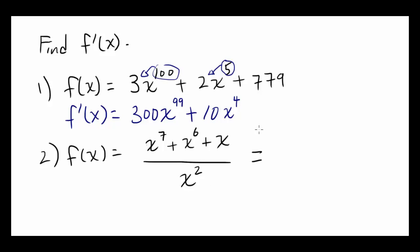x to the 7th over x squared is x to the 5th. x to the 6th over x squared, 6x on top, 2x on bottom is x to the 4th. And x over x squared is 1 over x, or x to the negative 1st power.